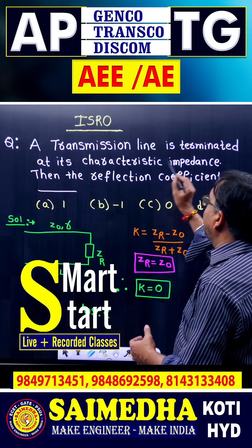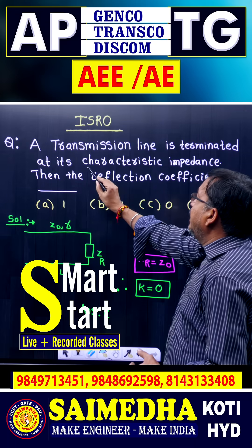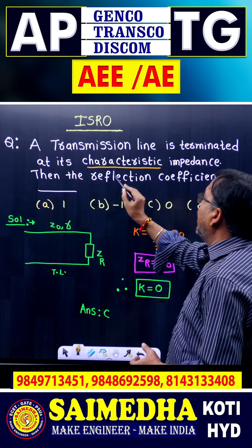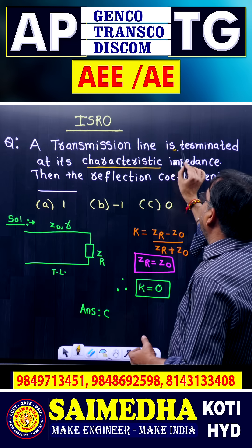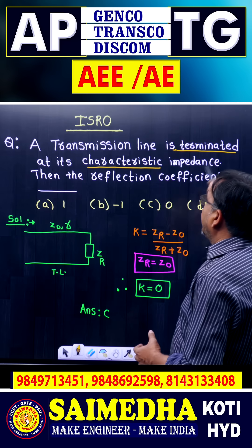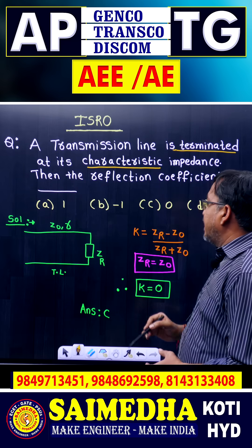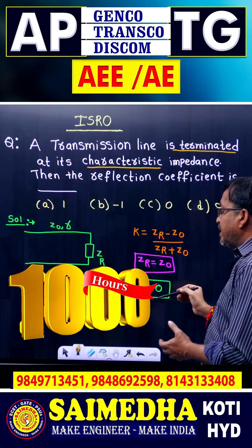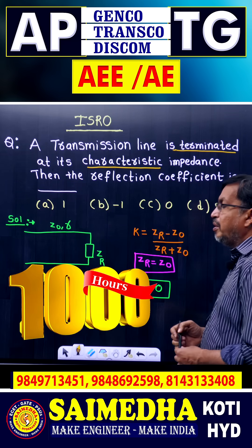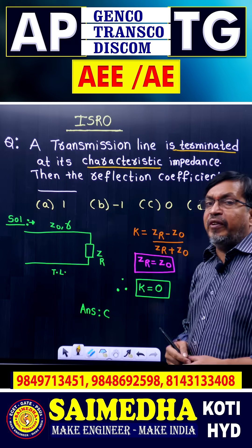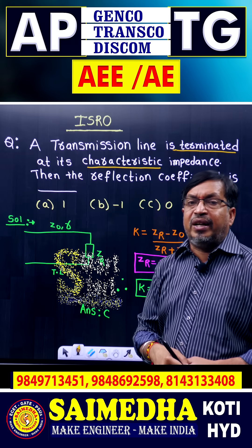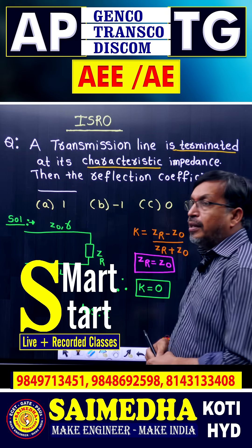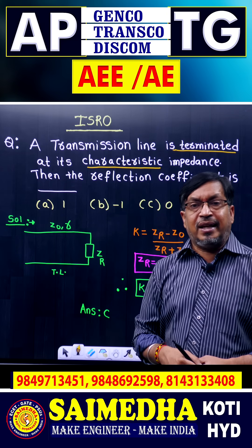Here, the given condition is that the characteristic impedance is the same as the terminated receiving end impedance, so ZR equals Z naught. Substituting this, K equals zero — no wave will be reflected. Therefore, the answer is C: 0.